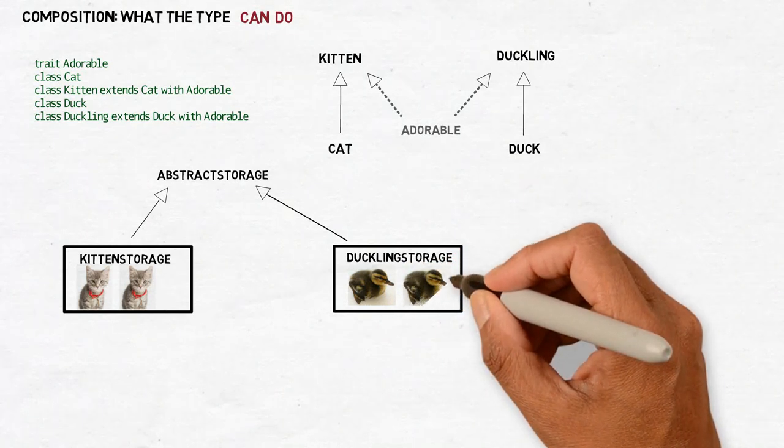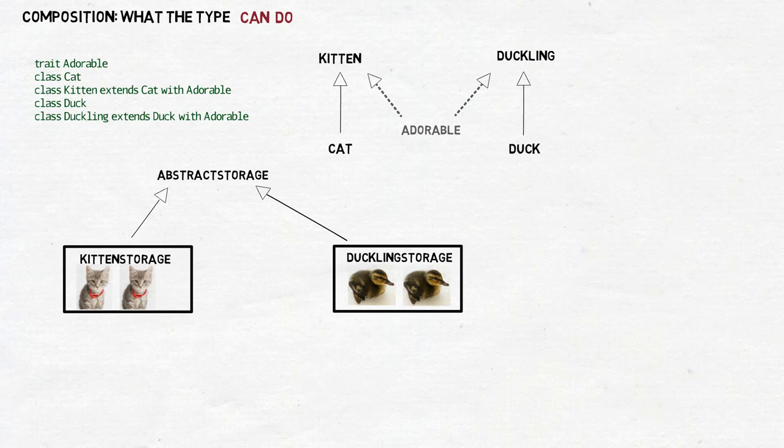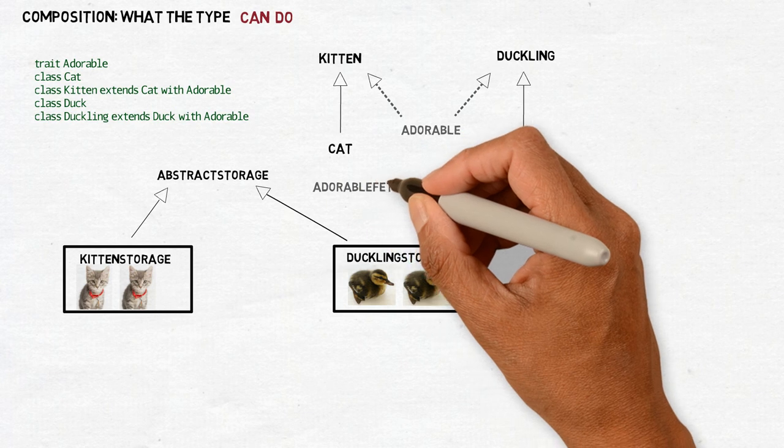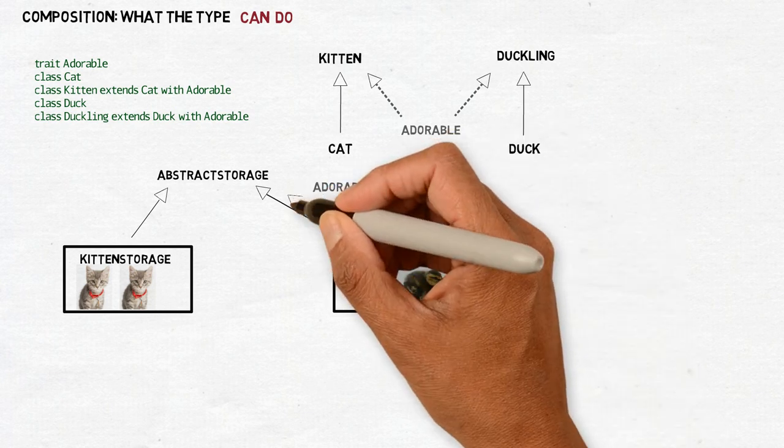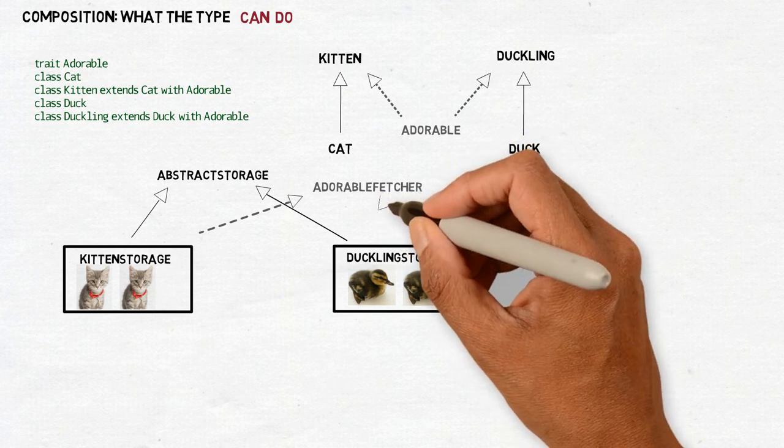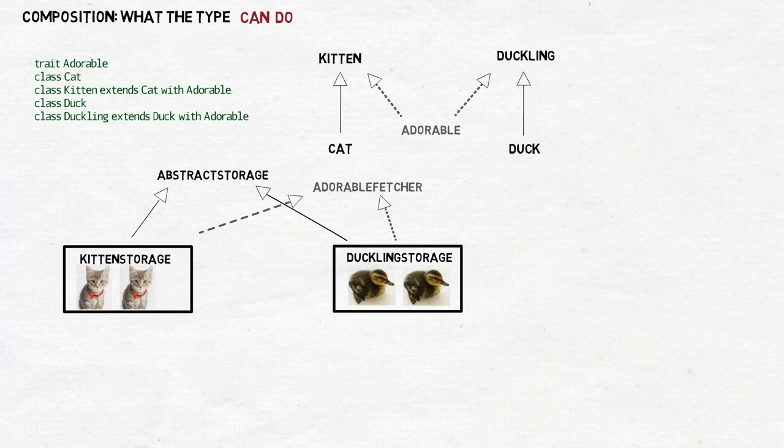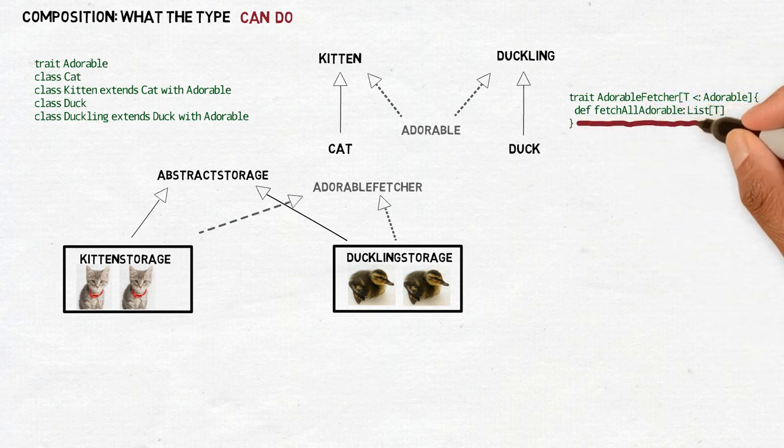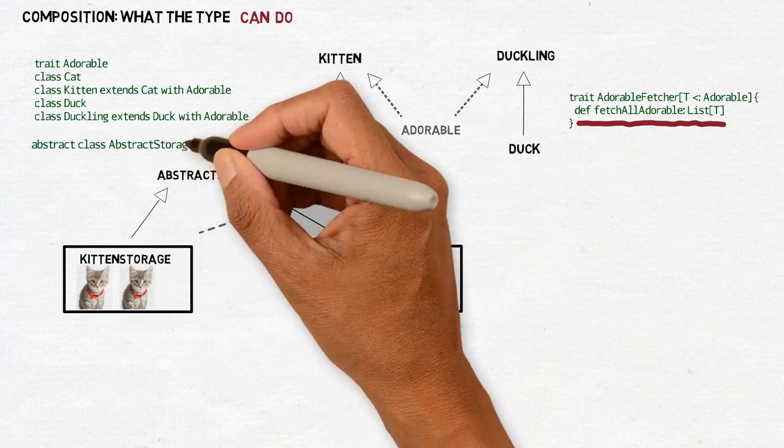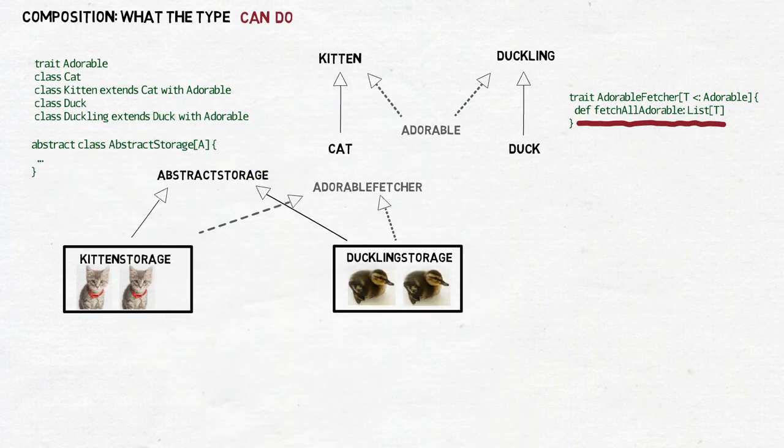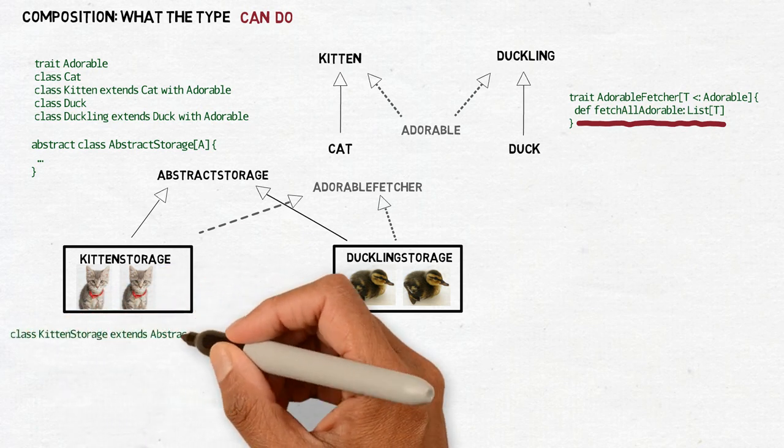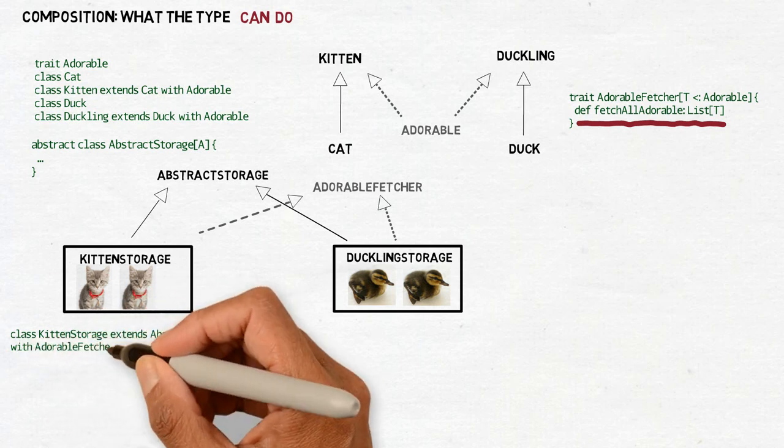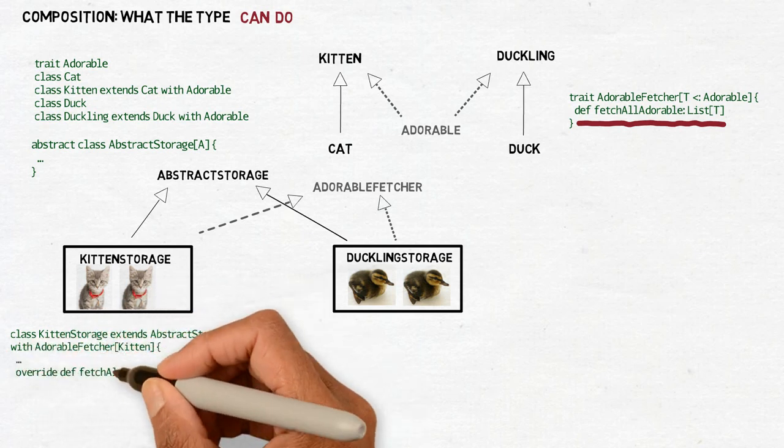Interfaces and traits are small, light, and in comparison, more independent from classes that implement them. Imagine we build an application with services and storages, and at some point, we want a service that will handle only adorable data to any storages that can fetch it. To do that, we will create a trait adorable fetcher and put it somewhere near the new service. And we will have this method fetch all adorable. Only after that, almost as if it was an afterthought, we will go to the storages and make some of them implement the adorable fetcher trait. So that, in the future, the service will know that it can use them to fetch adorable data.